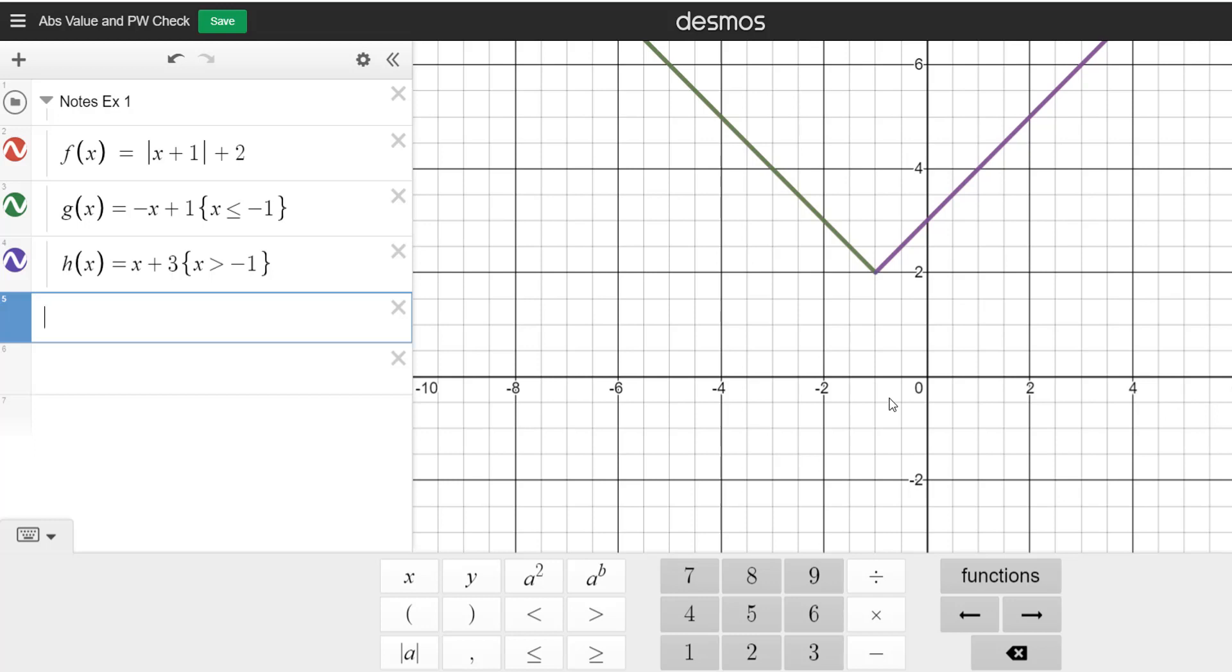So go ahead and hit enter. And what I want you to do is type in x equals. So this is going to be x equals. And then the axis of symmetry, again, we're going to use that h value, which in this case was negative 1. So x equals negative 1.